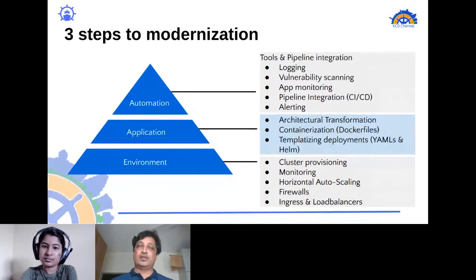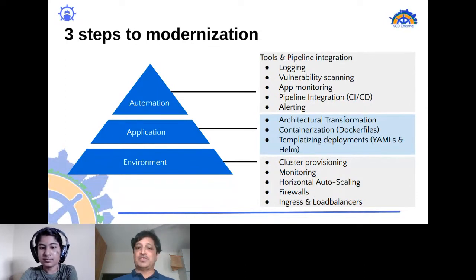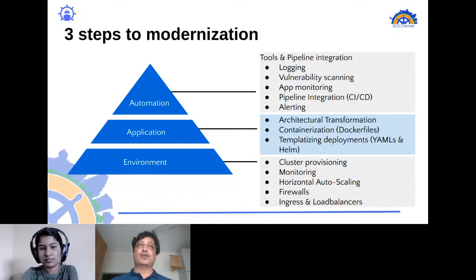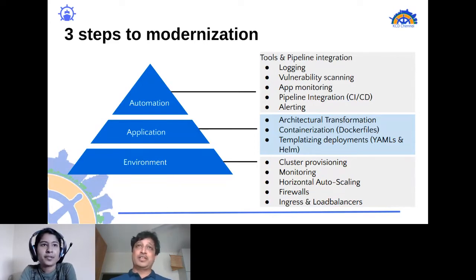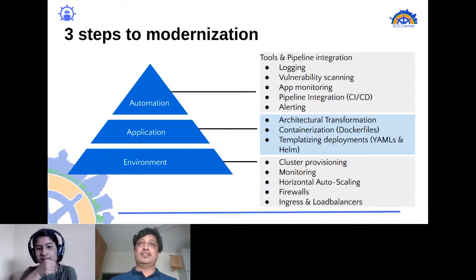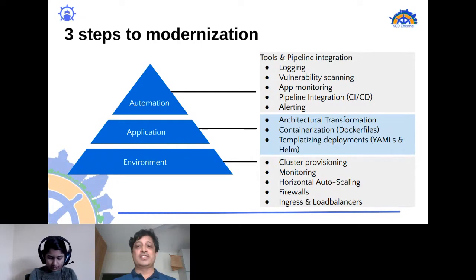The application must be containerized, resulting in a Dockerfile, and the deployment must be templatized with corresponding YAML files and Helm charts. In terms of automation, once you move there you have to ensure your image is scanned for vulnerabilities, there is logging for all actions and events, alerts via PagerDuty or Slack, application performance monitoring, and pipeline integration for continuous integration and deployment.